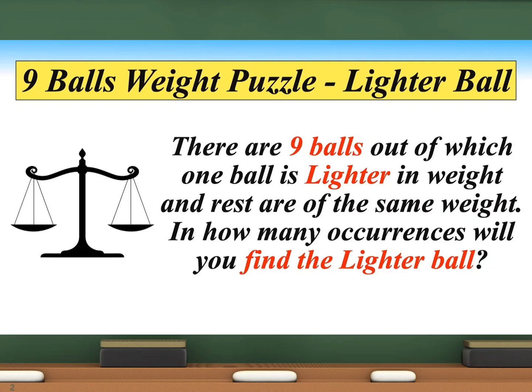The immediate solution which comes into our mind while solving this puzzle is to keep one ball at a time in the physical balance. But when you weigh one ball at a time, the number of occurrences may be much more. We may weigh up to 8 to 9 times to find out the lighter weight ball.